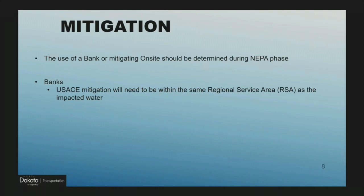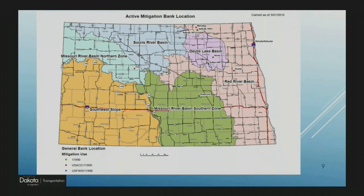Mitigation — the use of a mitigation bank or on-site mitigation should be determined during the NEPA phase. We're trying harder to get this accomplished and I think most of the time it can be. Russ and I are working with our liaisons to better help identify these locations and scenarios. If you plan to use a bank and mitigation is required by the Corps, we'll need to mitigate in the same RSA as the impacted water. The Corps requires mitigation in the same RSA — regional service areas are combined watersheds. There are six RSAs in North Dakota, and we don't have banks in every RSA, and a few banks are close to being depleted.